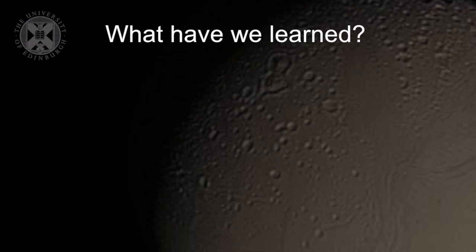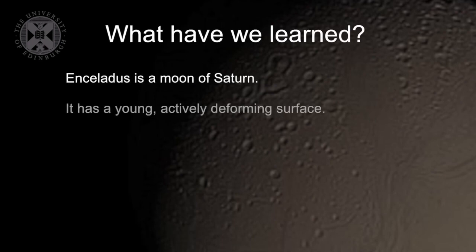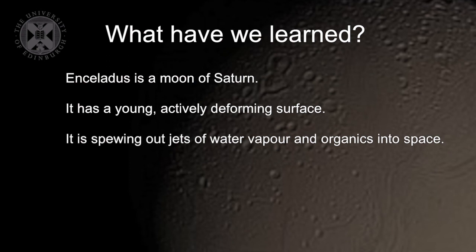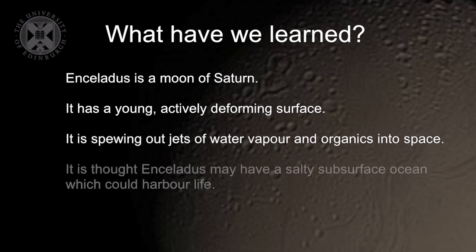So what have we learned in this lecture? We've learned that Enceladus is a tiny moon of Saturn. It has a young, actively deforming surface. Most importantly for astrobiologists, we've learned that it's spewing out jets of water vapor and organics into space, and it's thought that Enceladus might have salty water beneath the surface that's providing the source of water for these plumes. It could even be a location to search for life.